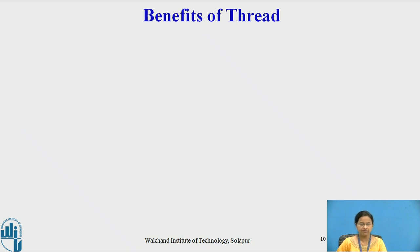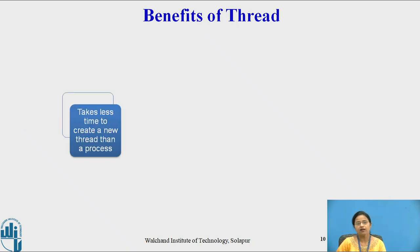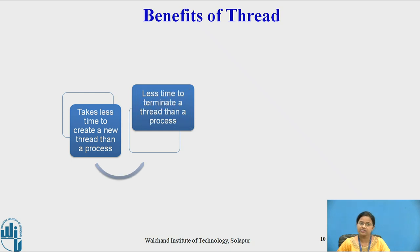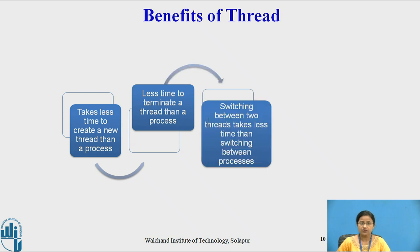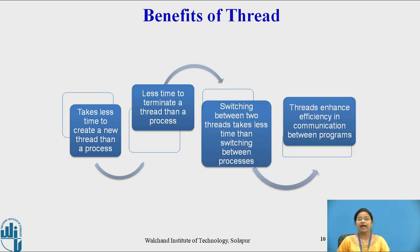What are the different benefits of threads? A thread takes less time to create than a process. It also takes less time to terminate a thread than a process. Switching between two threads takes less time than switching between processes. And threads enhance efficiency in communication between programs. Due to these benefits, threads are used within processes.